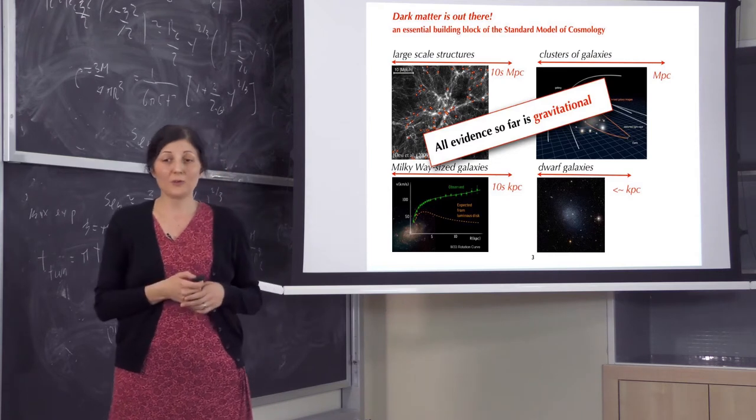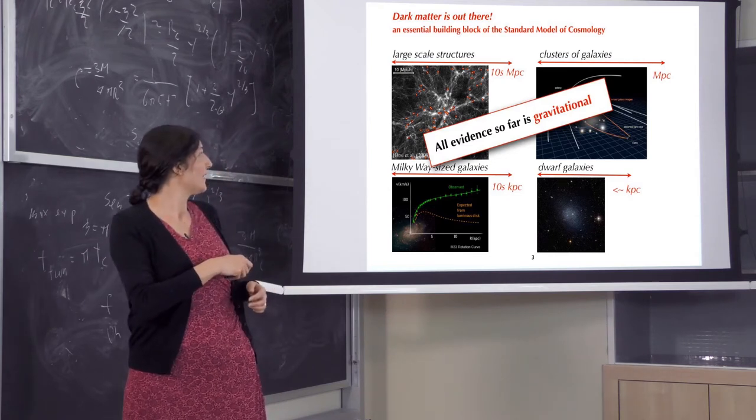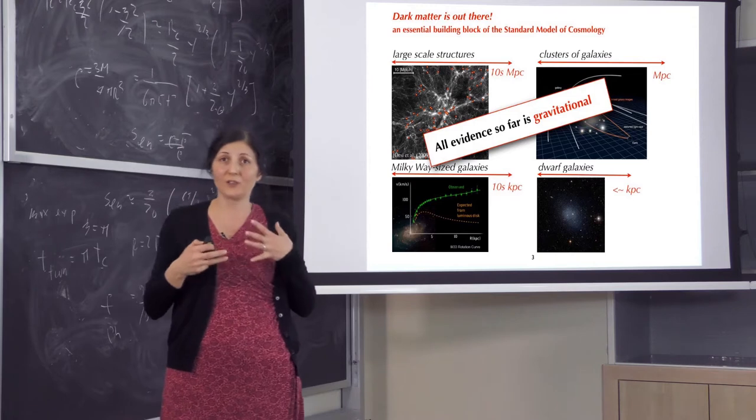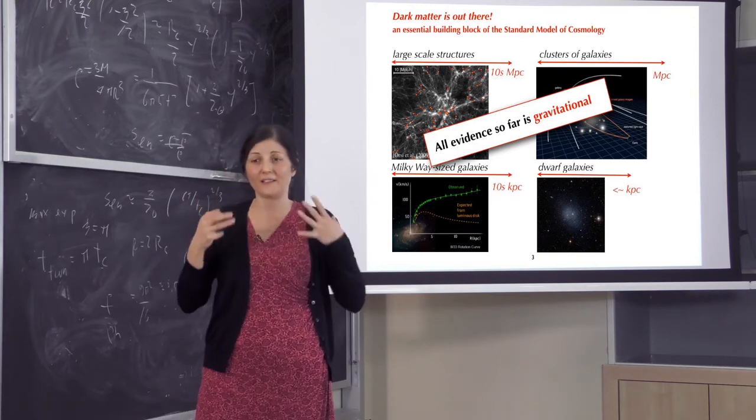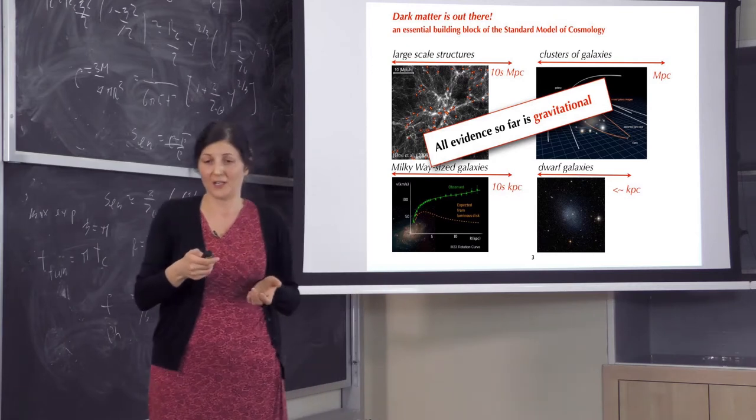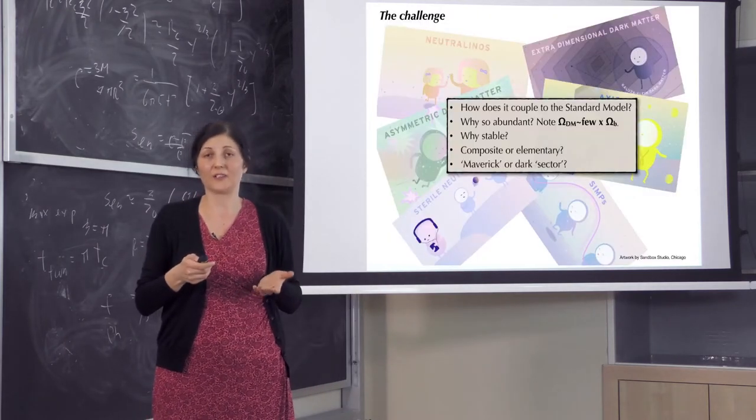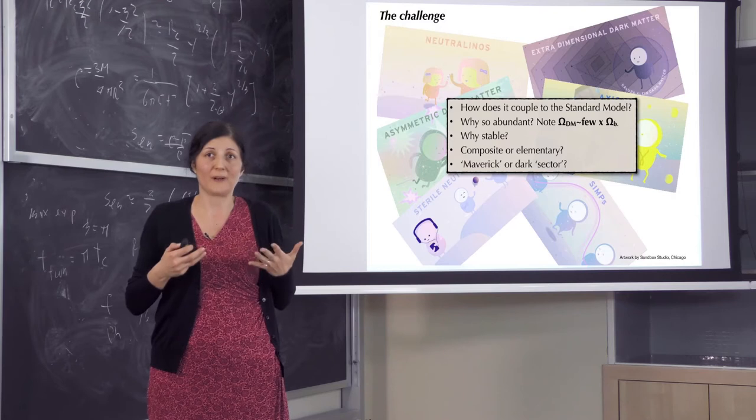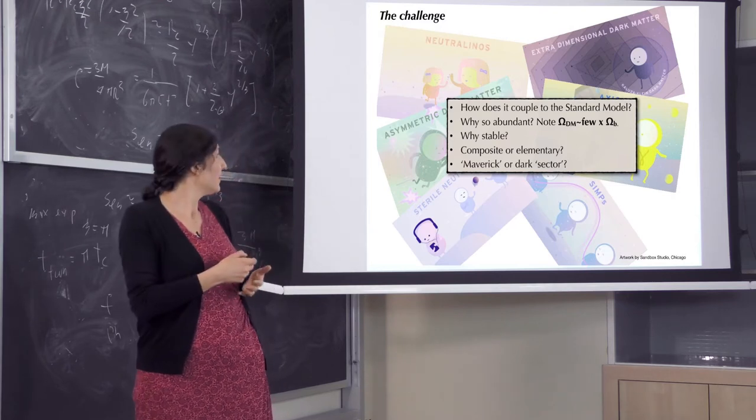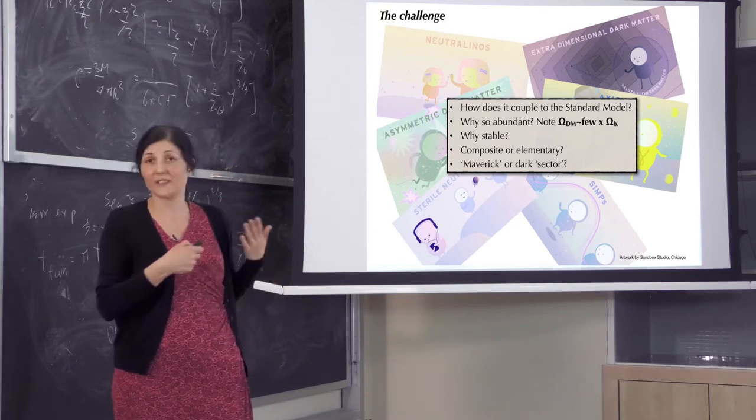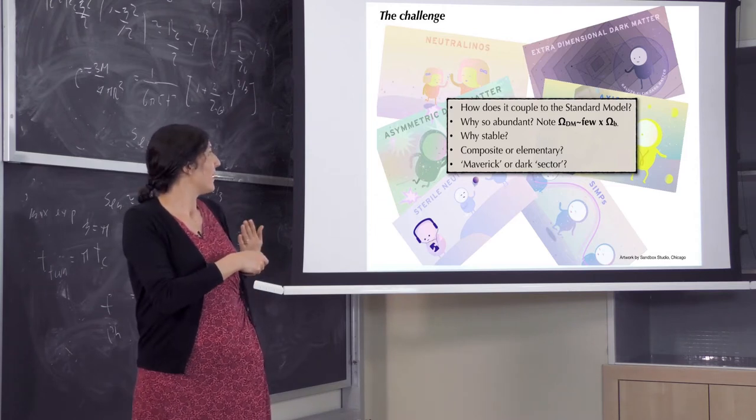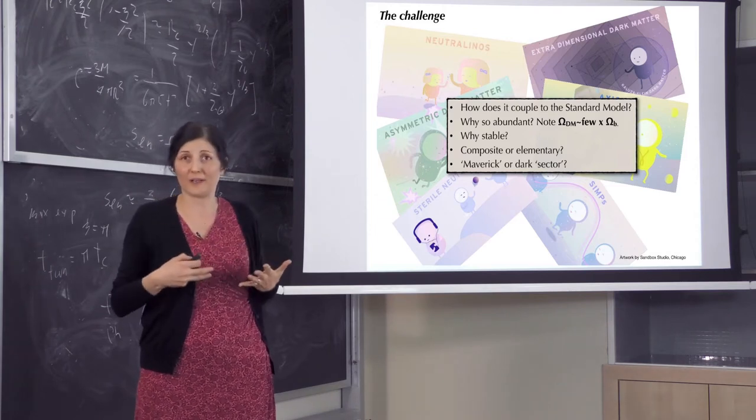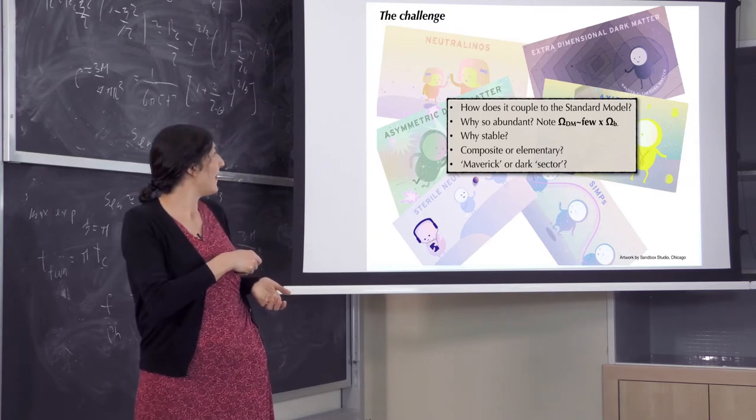But one thing to note is that all evidence we have is gravitational. We basically know that there are some particles, some mass, that interacts gravitationally with matter. But we do not have any other sign from these particles of what they could be. So what we are trying to find in modern science now is what is that particle? How does it couple with other particles that we know? How abundant it is?